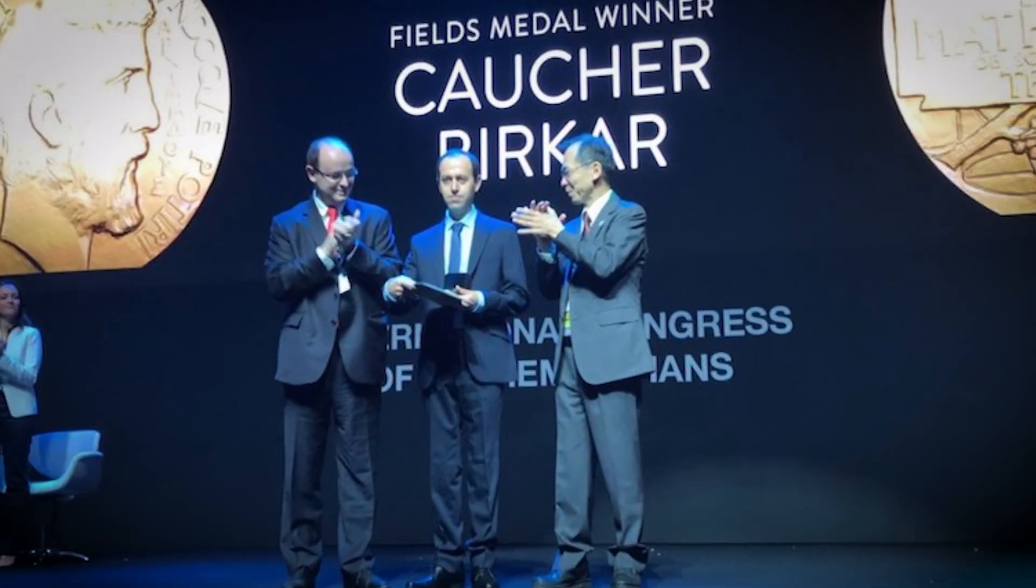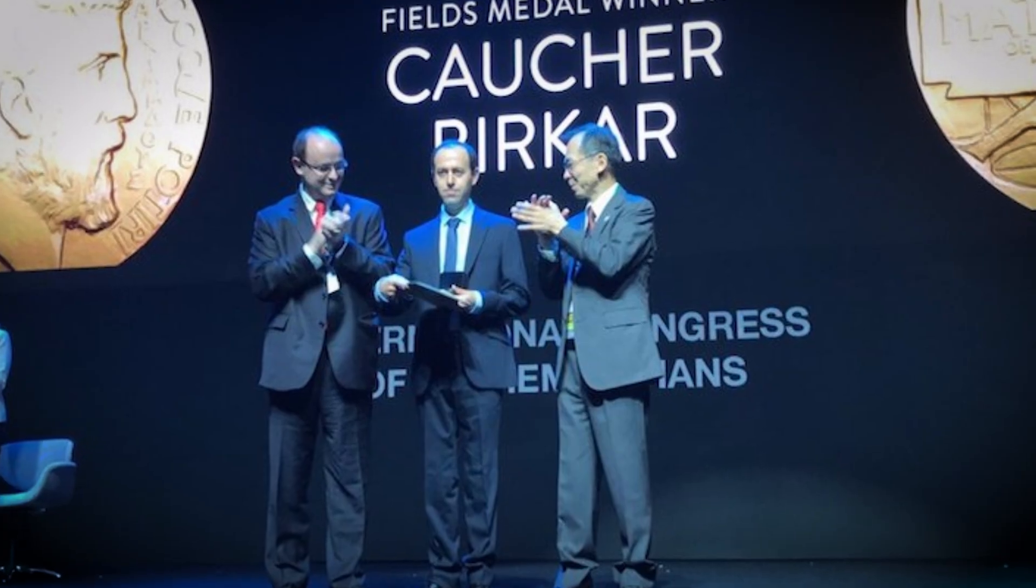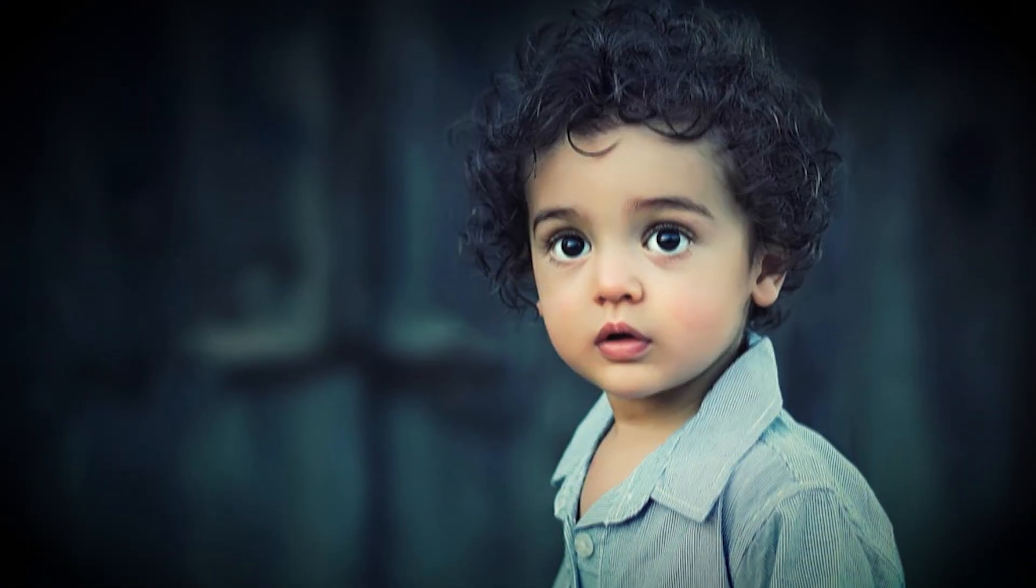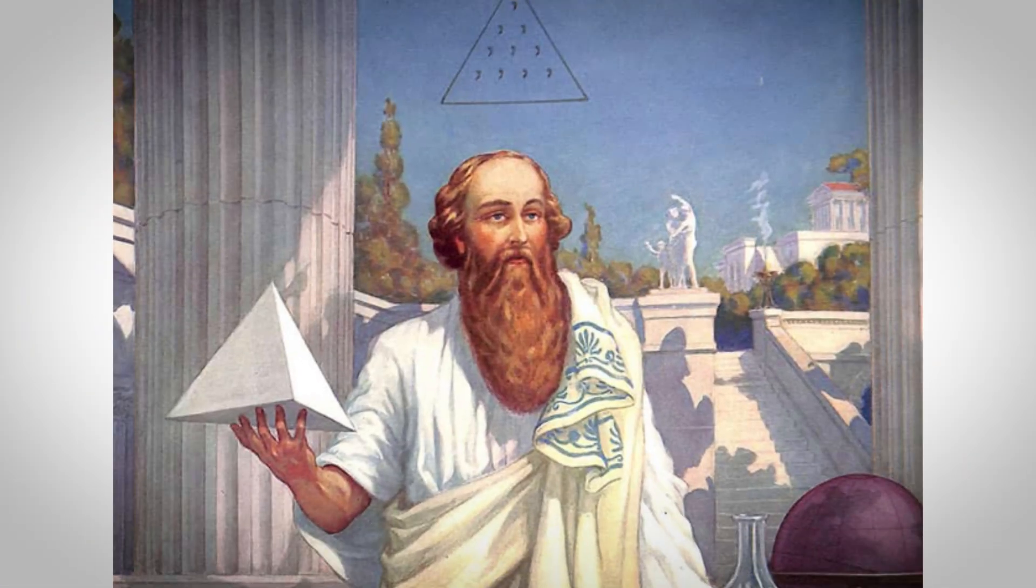Fields Medal. The Fields Medal is the Nobel Prize of Mathematics. If you get one of these, it means that you're under the age of 40 and you've already made significant contributions to mathematics.